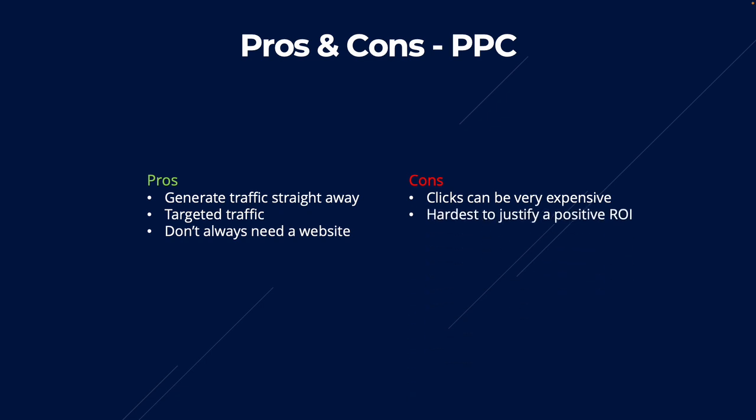The second con of PPC is that it can be harder to justify a positive ROI. The main reason is that you'll generate sales from your affiliate website as revenue, but then you have to deduct a massive investment used to generate those clicks, which can eat into your margin. The third con is that PPC is typically not sustainable — you really need to ask yourself whether you want to invest in a channel that stops bringing results as soon as you stop paying.